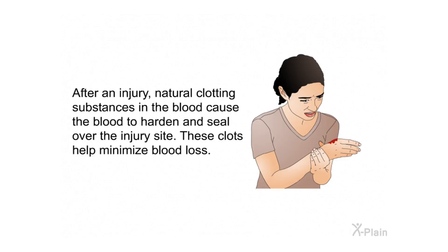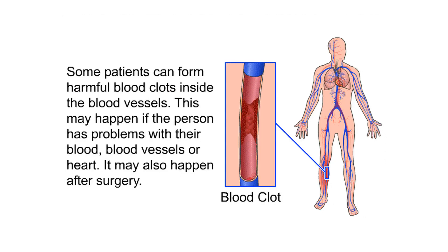After an injury, natural clotting substances in the blood cause the blood to harden and seal over the injury site — these clots help minimize blood loss. However, some patients can form harmful blood clots inside the blood vessels. This may happen if the person has problems with their blood, blood vessels, or heart, and it may also happen after surgery.